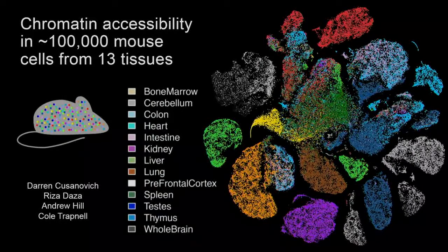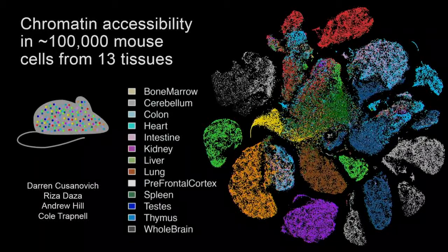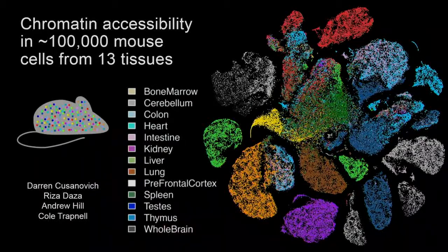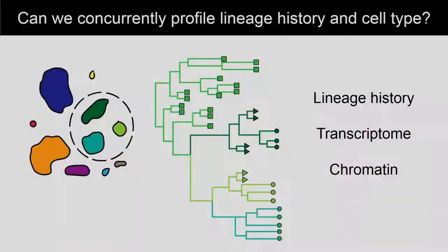This is another example — not looking at transcriptomes but rather chromatin accessibility in a mammalian system — where we're now looking at 100,000 mouse cells. Every point here is a mouse cell from 13 tissues. The point is just that this kind of approach is very scalable, and we hope to be able to go much further with this.